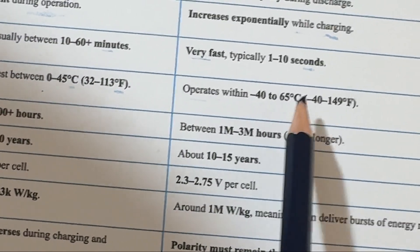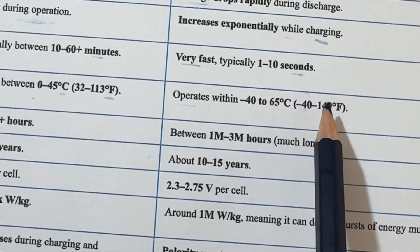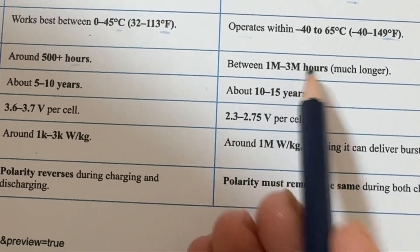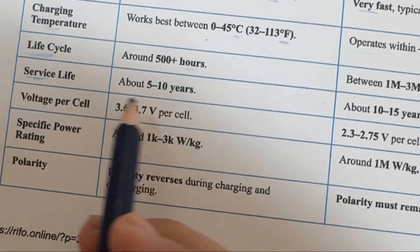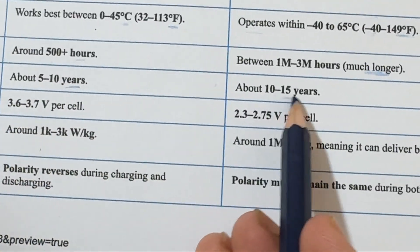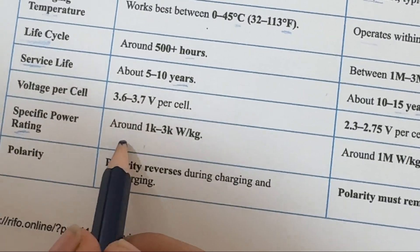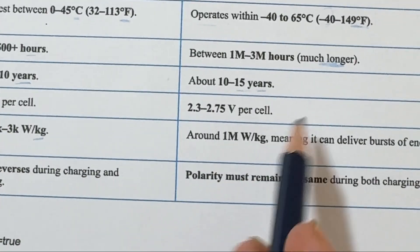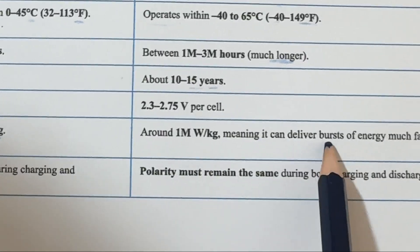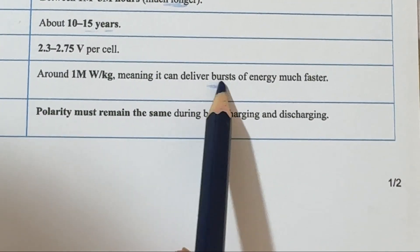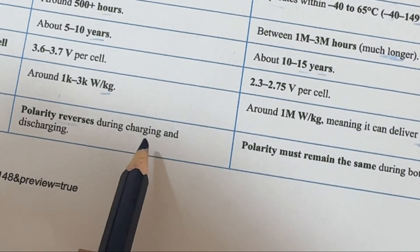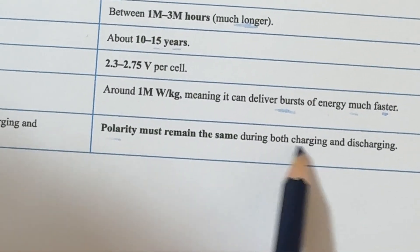Capacitors operate within -40°C to 165°C (-40°F to 149°F). Life cycle: batteries last around 500 hours, while capacitors last between 1 million to 3 million hours — a much longer service life. In years, that's about 5 to 10 years for batteries versus 10 to 15 years for capacitors. Specific power rating: batteries are around 1 kW to 3 kW per kilogram, while capacitors are around 1 MW per kilogram, meaning they can deliver bursts of energy much faster. Polarity: in a battery, polarity reverses during charging and discharging; in a capacitor, polarity must remain the same during charging and discharging.